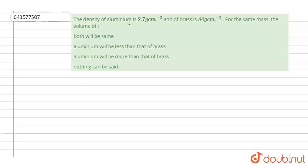The density of aluminium is 2.7 gram per centimeter cube and brass is 84 gram per centimeter cube. For the same mass, the volume of: Option A - both will be same; Option B - aluminium will be less than that of brass; Option C - aluminium will be more than that of brass; Option D - nothing can be said.